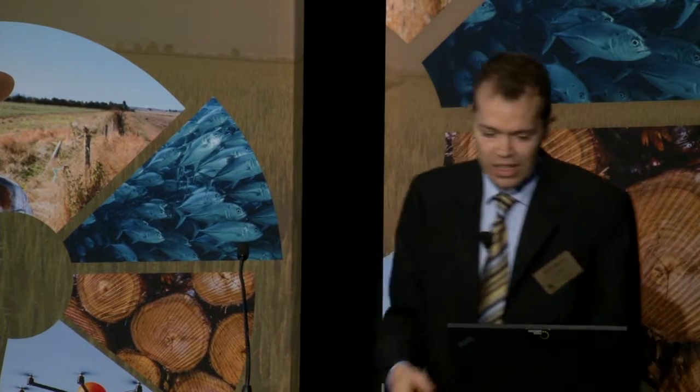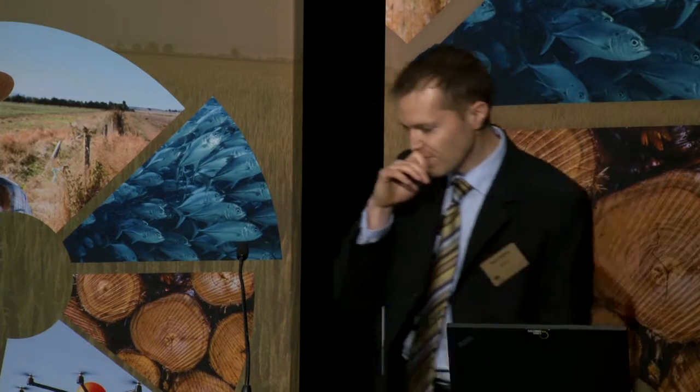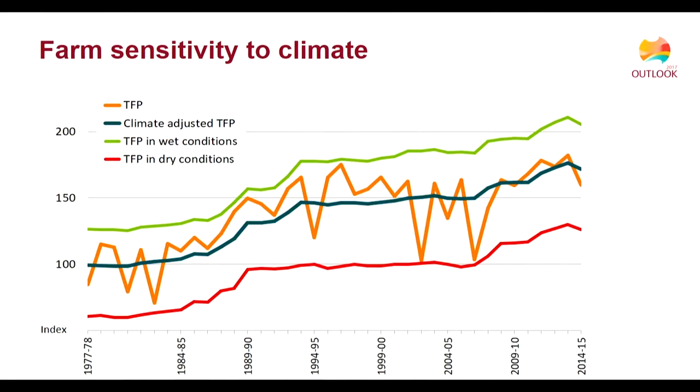In addition to looking at productivity under average conditions, we can also use the model to look at productivity under dry and wet conditions. The red line shows what the average productivity of these farms would look like if every farm in every year was experiencing a 1-in-20 drought, and the green line shows what productivity would look like if every farm was experiencing wet conditions. One of the unique features of the model is that it can detect changes in the way farmers respond to climate shocks over time — the model can tell that farmers in 1978 respond to a given climate shock differently to farmers in 2015 because their technology is different. As a result, the sensitivity of farms to climate — the gap between those lines — actually changes over time.